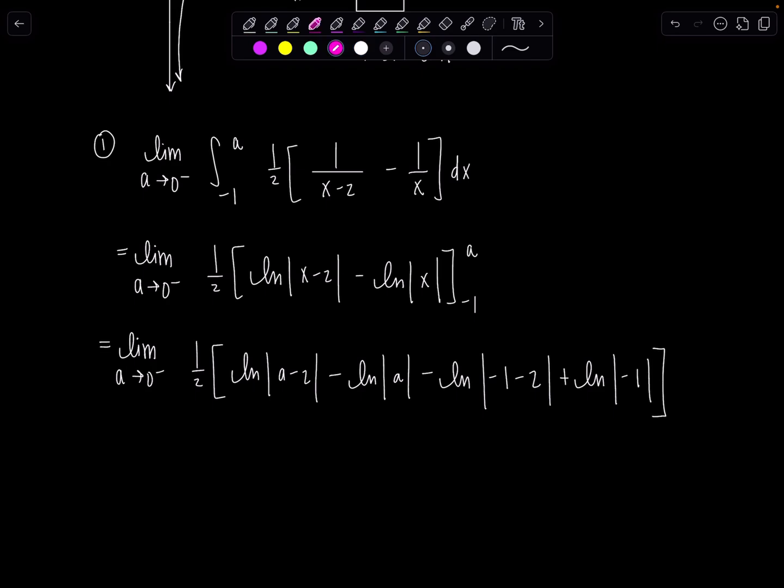So this is just going to be zero. Negative one minus two, that's negative three. But then I take absolute value, so this is just ln three.